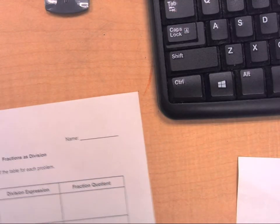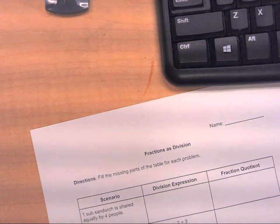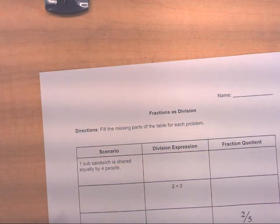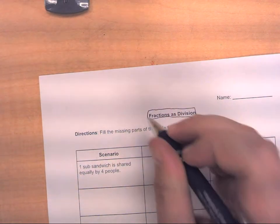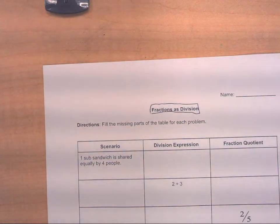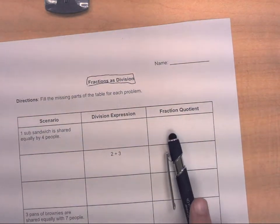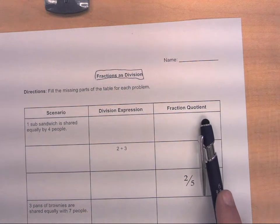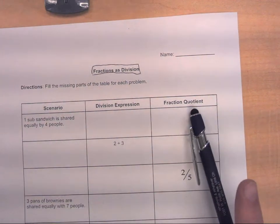I'd like to go over what we talked about in class today. This relates back to what we've been discussing going all the way back to Wednesday of last week — the idea of fractions as division and division as fractions. In particular, understanding that when we divide a whole number by a whole number, we can express the quotient as a fraction.